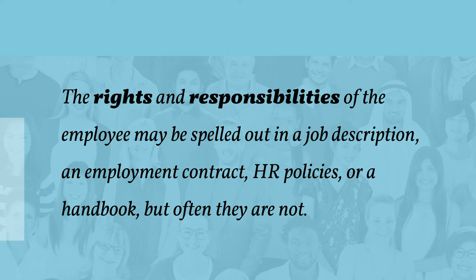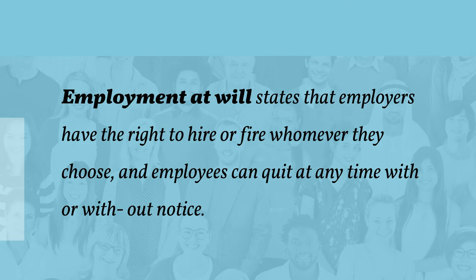The employment relationship is affected both by formal and informal agreements. The rights and responsibilities of the employee may be spelled out in a job description, an employment contract, HR policies, or a handbook, but they're often not. Employment at will is a common law doctrine stating that employers have the right to hire, fire, demote, or promote whomever they choose unless there is a law or a contract to the contrary, and employees can quit at any time with or without notice.